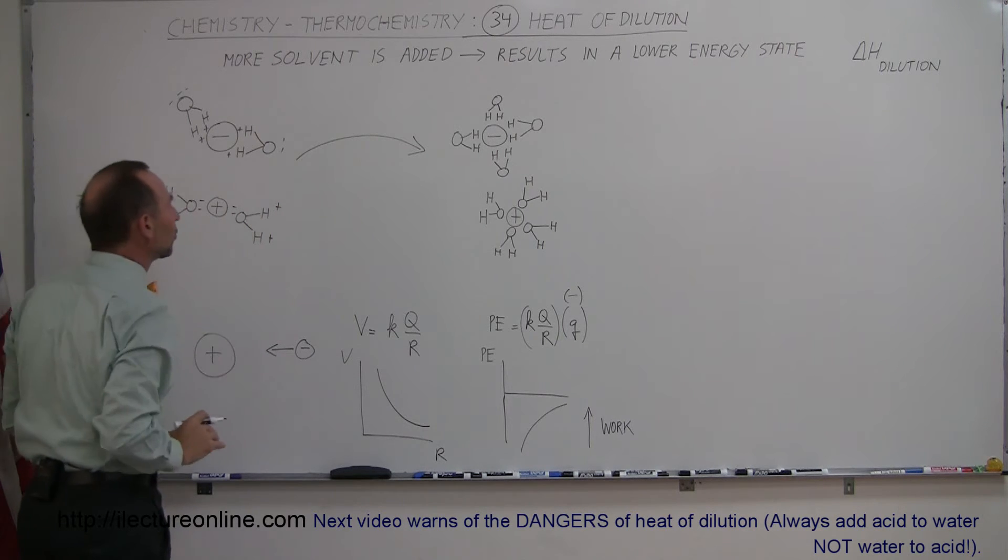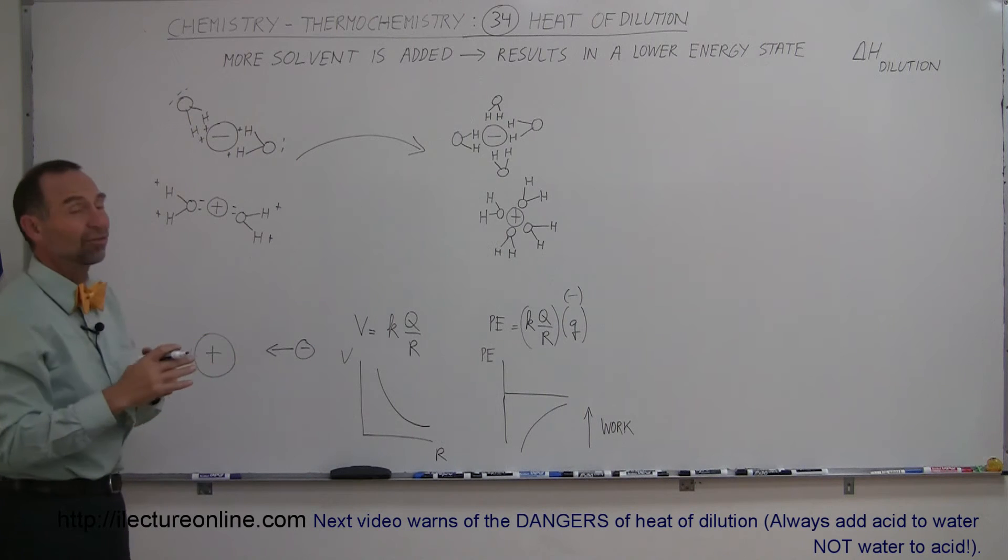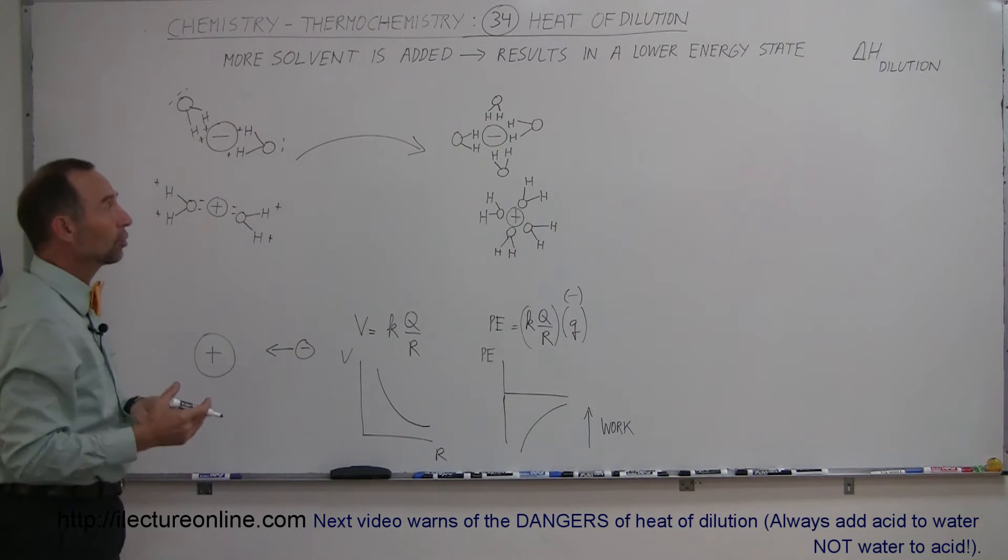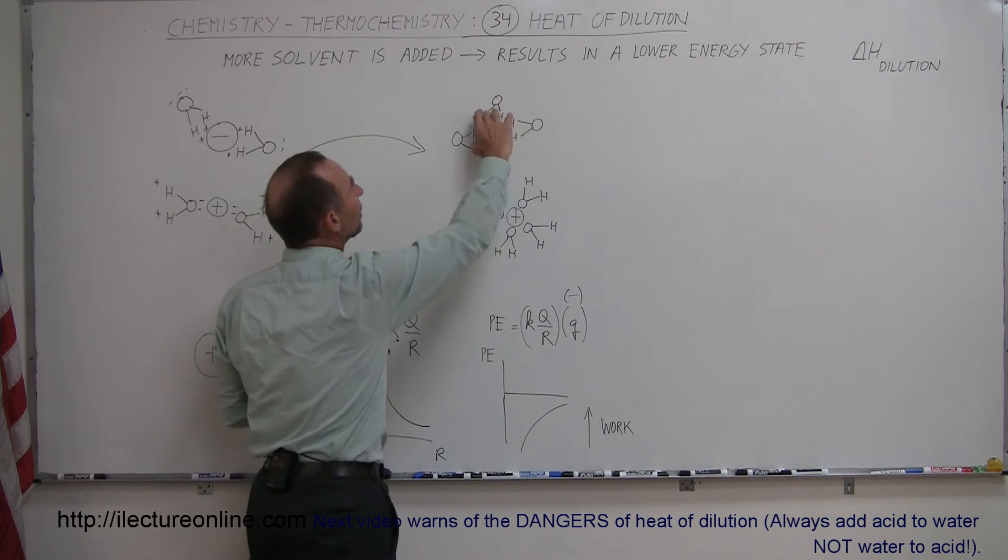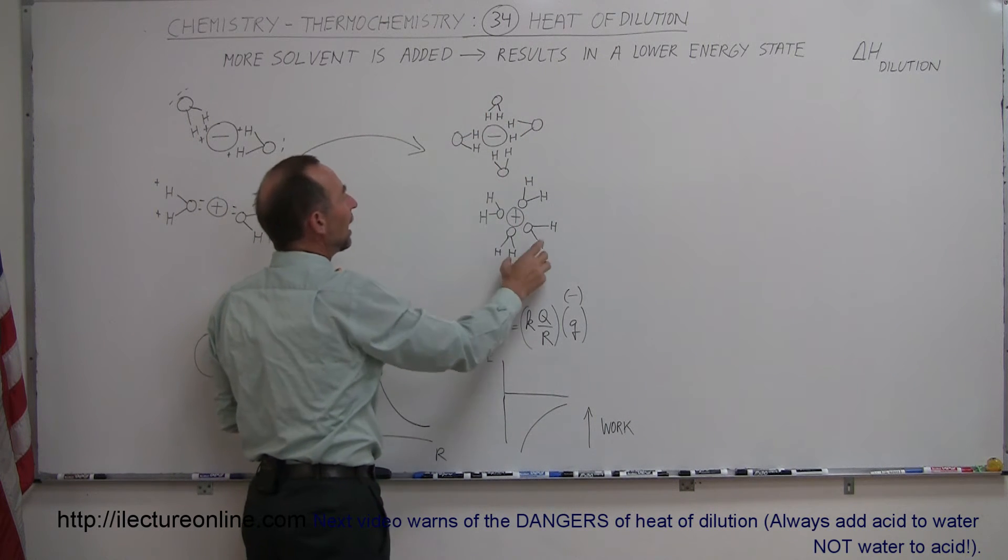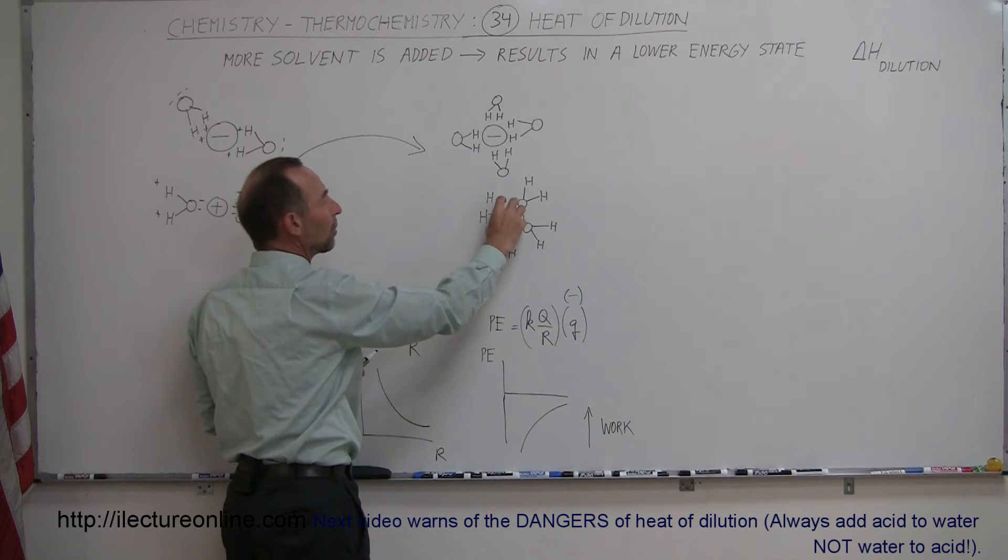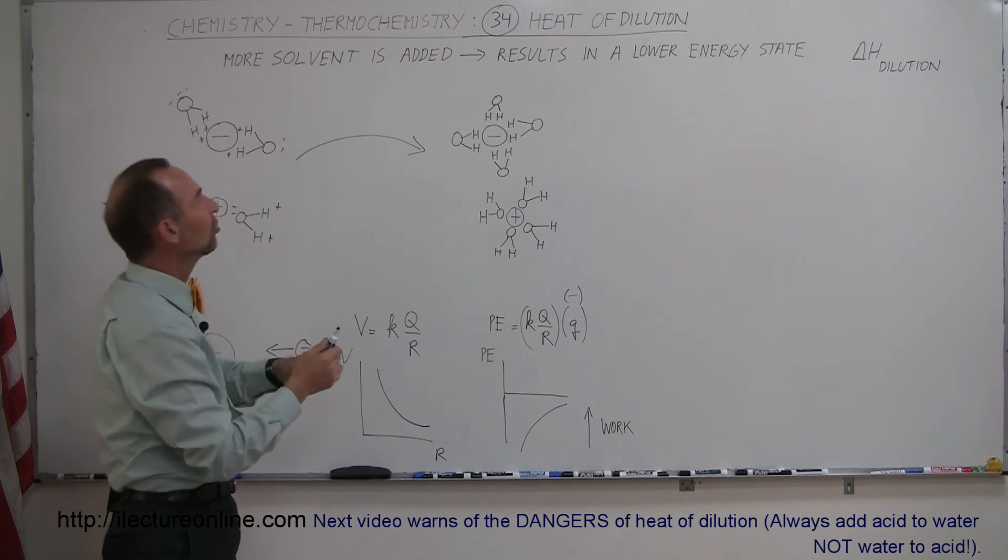will attract to the positive ions in solution. So what happens when you add more solvent? You just provide more of these water molecules for each ion that's present, and so you have many more of these water molecules surrounding the negative ion in this fashion, and you'll have more water molecules surrounding the positive ion in this fashion. And what happens then is you end up with a lower energy state.